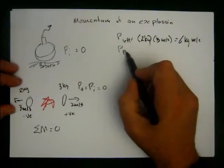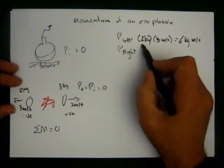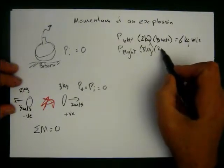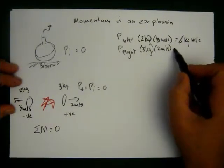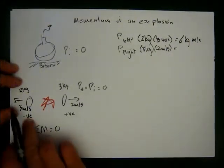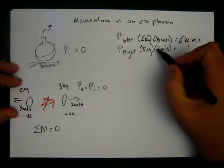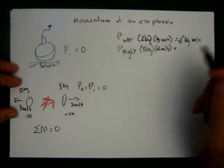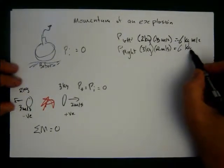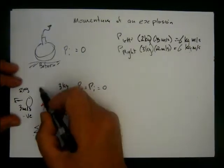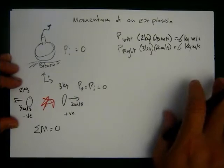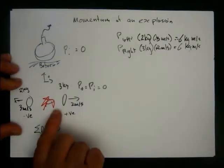P_right equals 3 kg times 2 meters per second, and it's going to be negative 2. Which one's negative? That one's negative. So it's going to be negative 6 meters per second. This is going to be positive. The reason why this one is negative is because we normally set up that one's positive. So this is positive 6 kg meters per second.